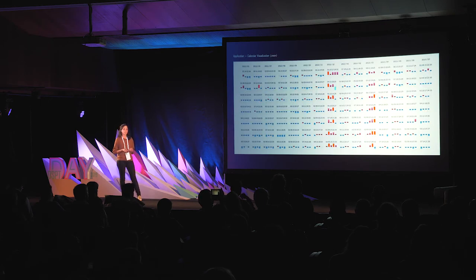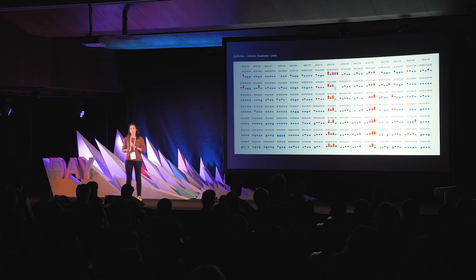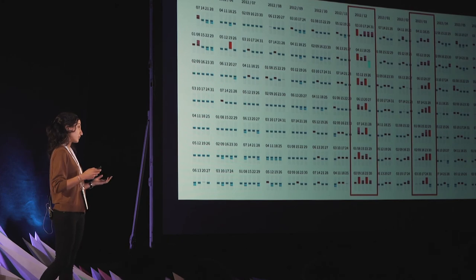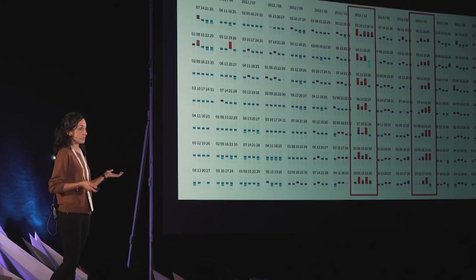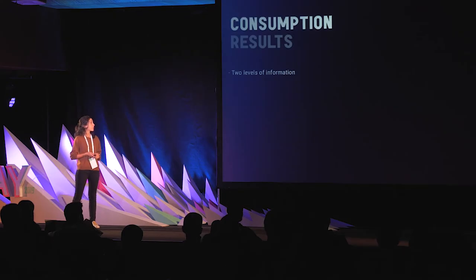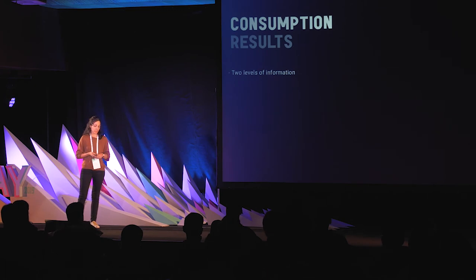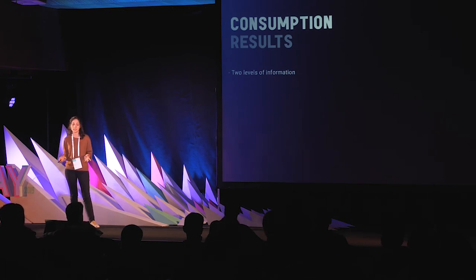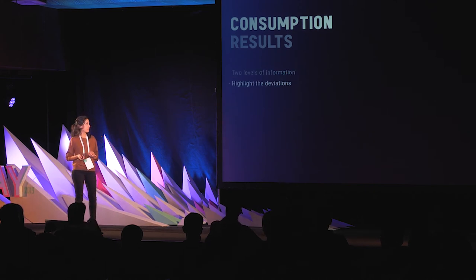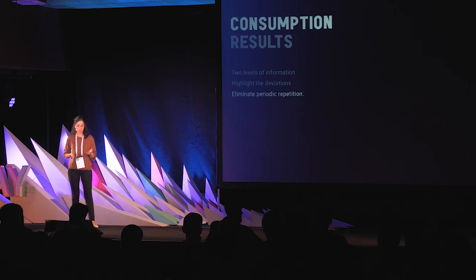With this visualization, we could see, for example, that two columns have a lot of red, meaning consumptions were too high compared to what is normal. These coincide with December and March, which coincides with Easter. So with this project, we achieved two levels of information — representing two full years of data while enabling the user to perceive specific values for each day, highlighting deviations and eliminating the periodic repetition from our first phase.